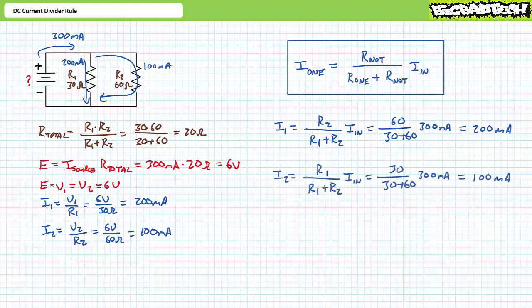A similar application of the DC Current Divider Rule for I2 demonstrates the current through the resistor of interest, in this case I2, is equal to the resistance of the element not of interest, R1, divided by R2 plus R1, times incoming current IN — in this case 300 mA. Substituting in our given values quickly and directly yields I2 to be the remaining one-third of 300 mA, or 100 mA, again without the necessity of first determining total resistance nor voltage. In summary, the same correct results but much, much quicker.